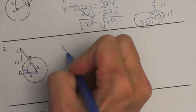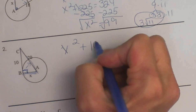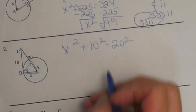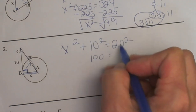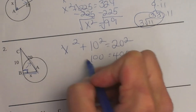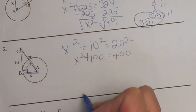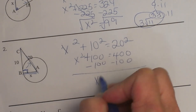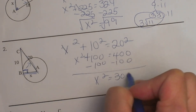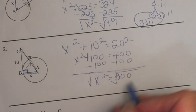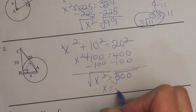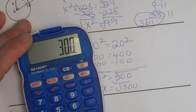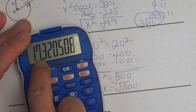Let's write down our equation: x squared plus b squared equals c squared, where b is 10 and c is 20. 10 squared is 100, and 20 squared is 400. Bringing down my x squared and solving for x: subtract 100 from both sides, giving x squared equals 300. To undo the square, I square root both sides, so x equals the square root of 300. Taking the square root of 300 gives approximately 17.32.